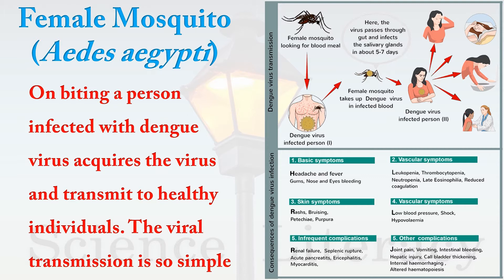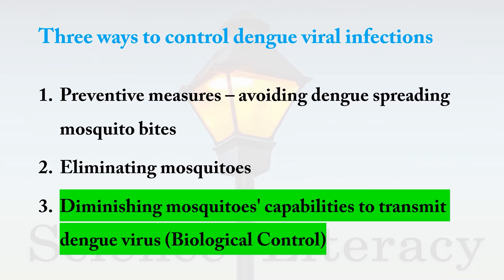There are several other symptoms involving various body organs. Ways to stay safe from dengue virus infection include: number one, preventive measures — avoiding dengue-spreading mosquito bites; and number two, eliminating mosquitoes, though that would disturb biodiversity.